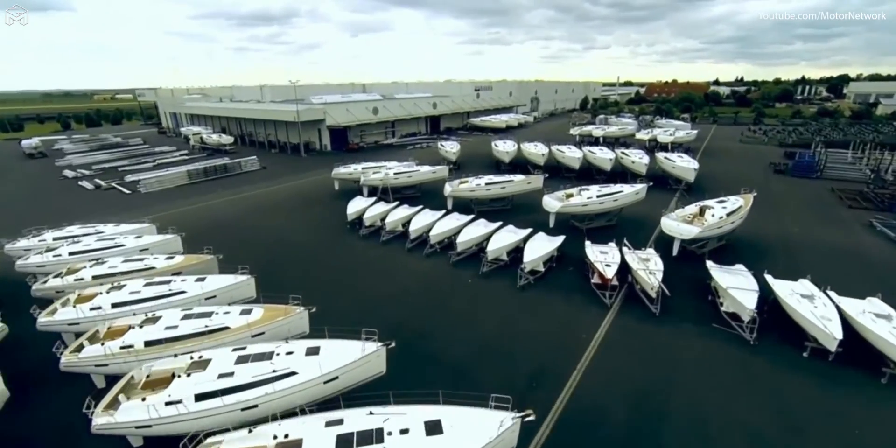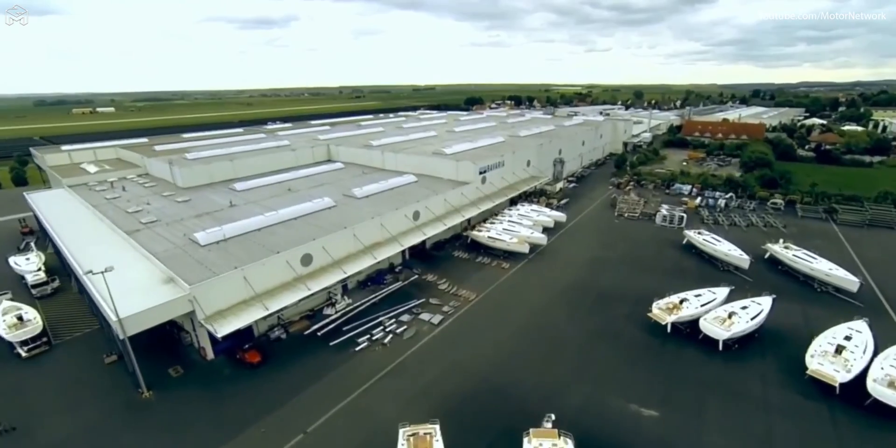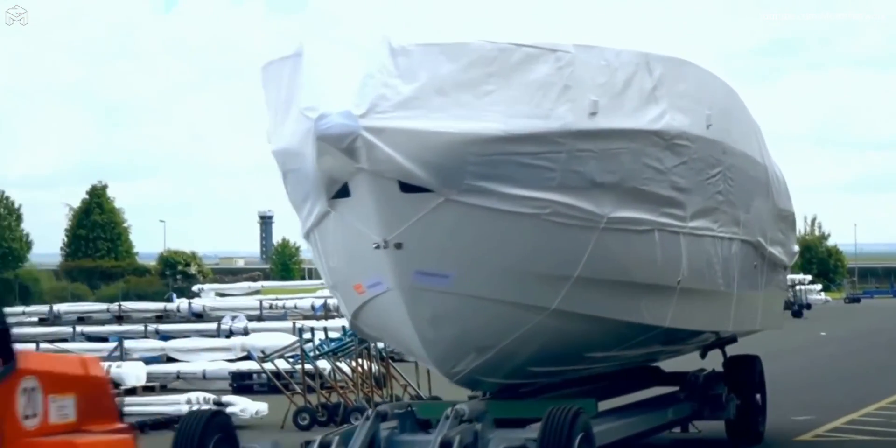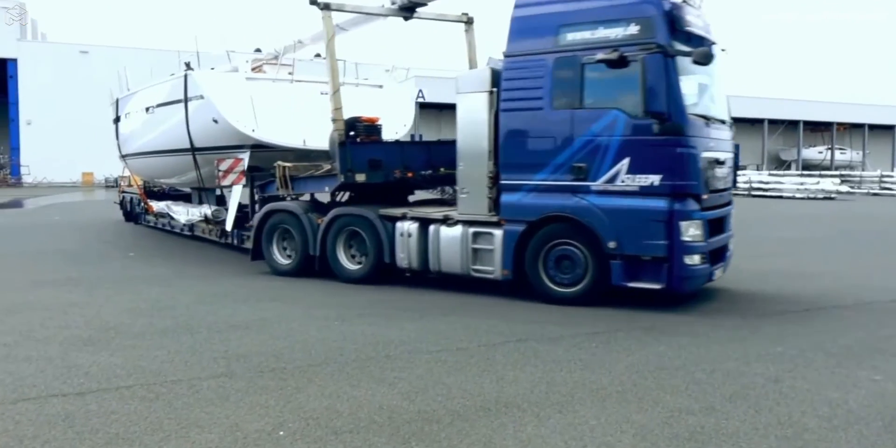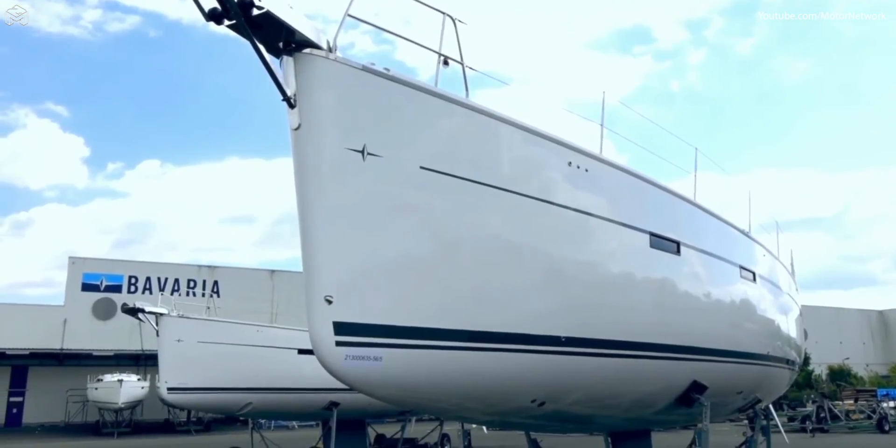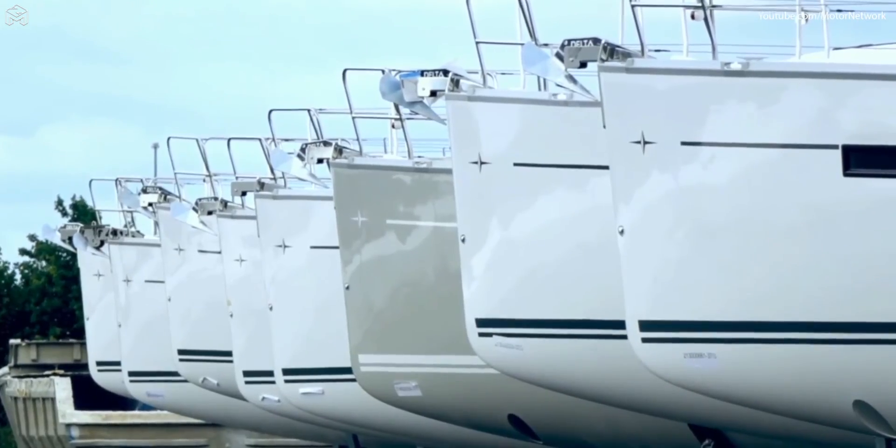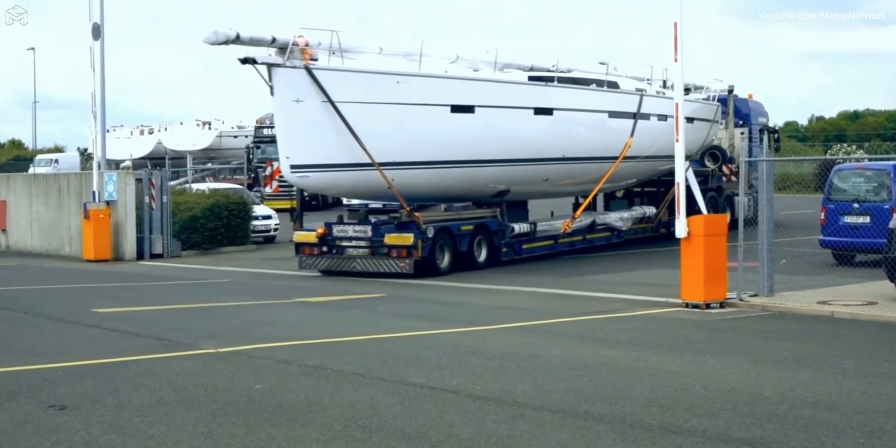Bavaria has a network of dealers who operate on a global level and are based on every continent across the globe. A new yacht is transported by truck, either directly to the dealer who ordered it, or taken to a port of departure for shipment overseas to its final destination. Well packed to ensure no damage occurs, it soon reaches its new owner.